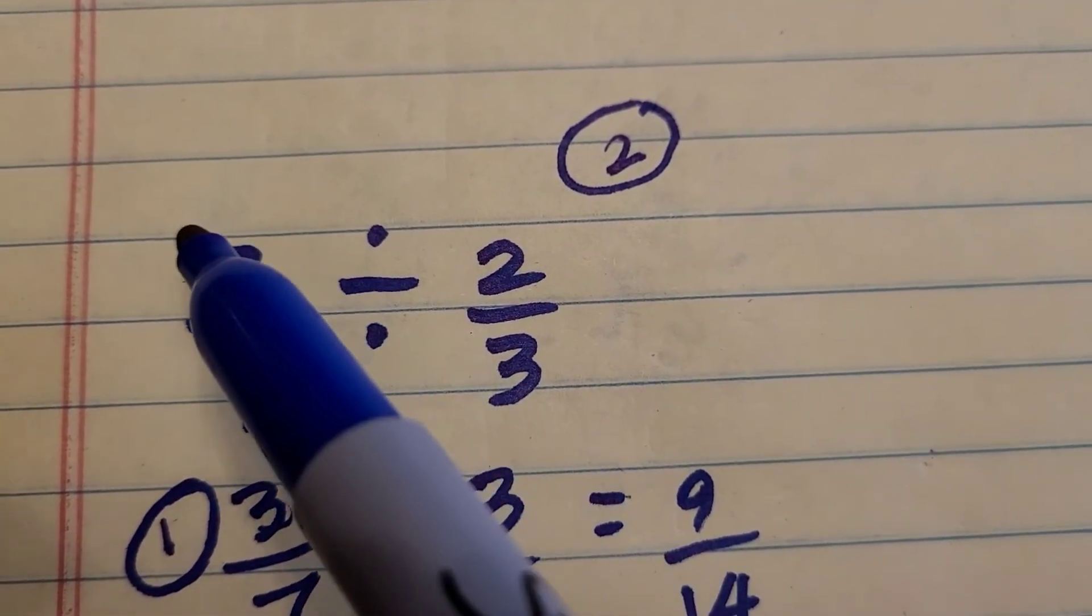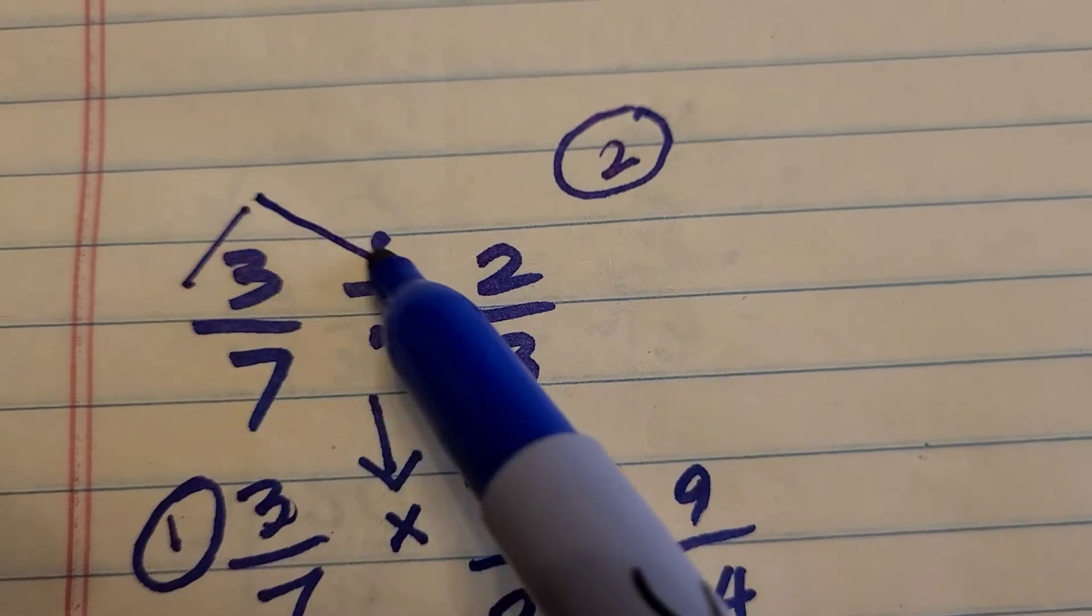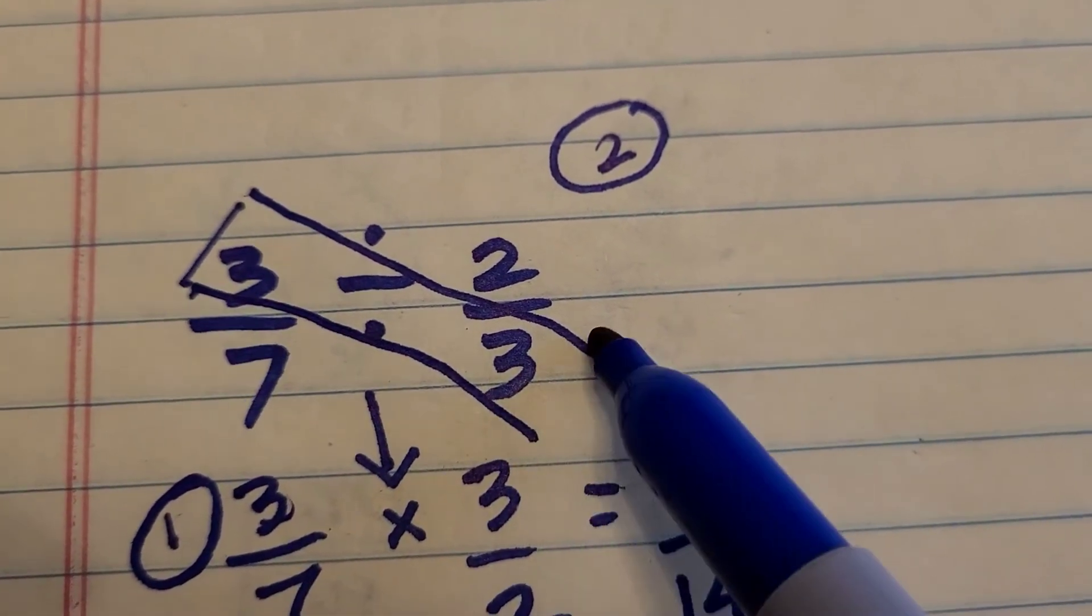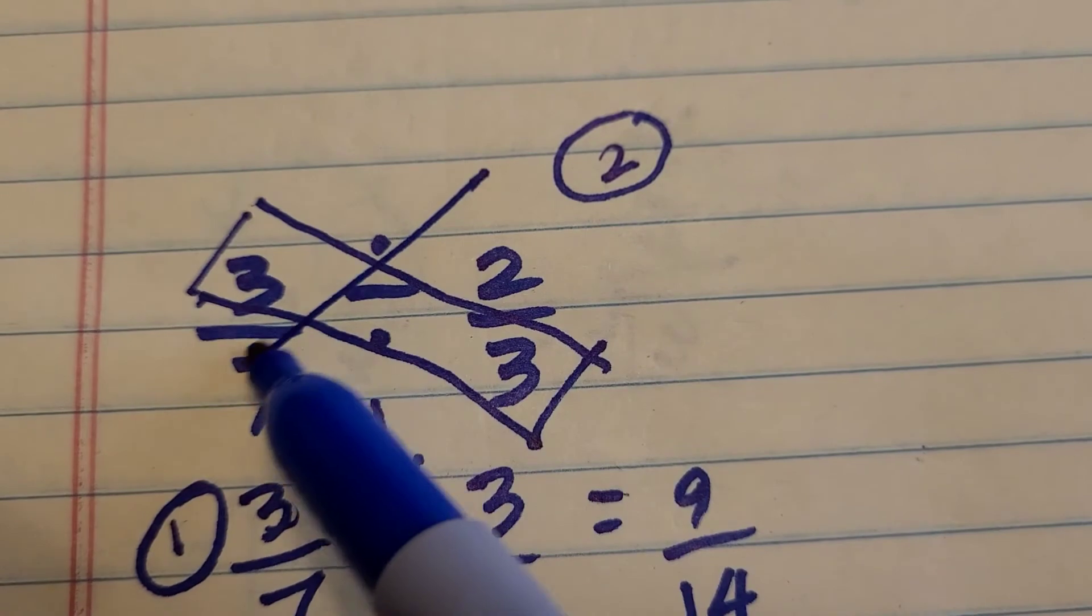Our second method just involves us doing cross multiplication. So we cross multiply here and here.